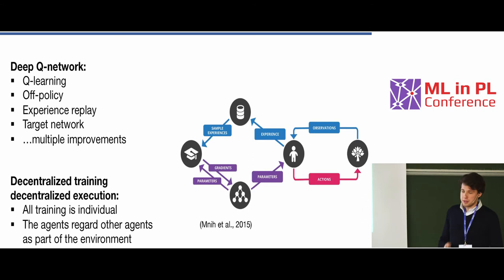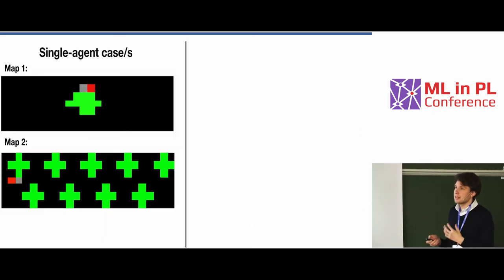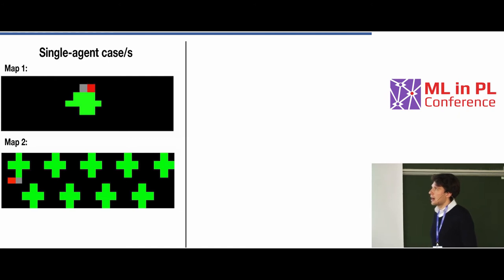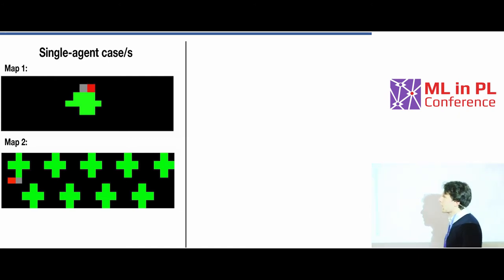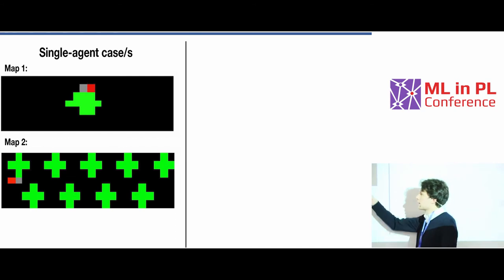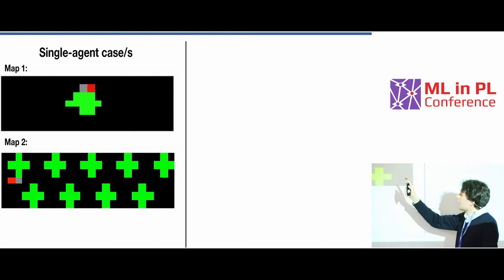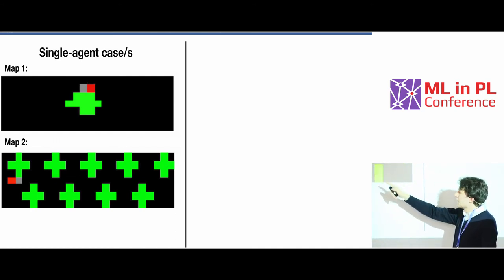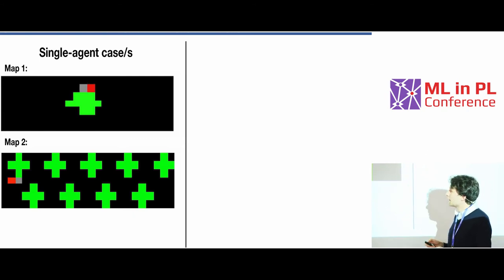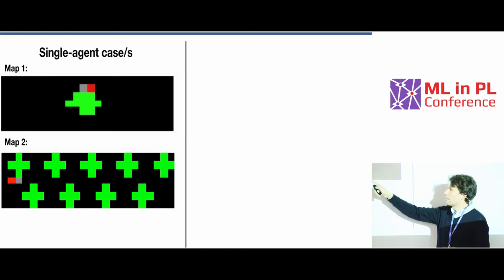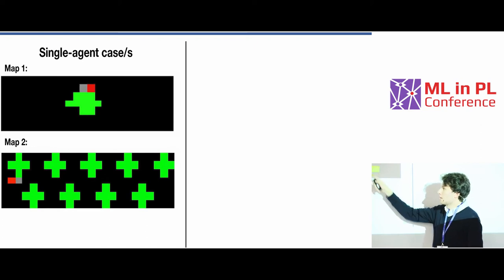So let's actually look at experiments. Before testing the multi-agent case, I looked at the single agent case. What is really important here is that these red squares are the agents and these green squares are the apples. The agent wants to collect as many apples as it can.